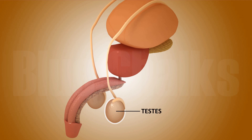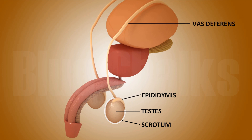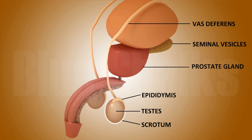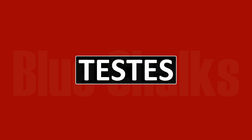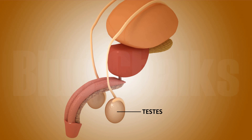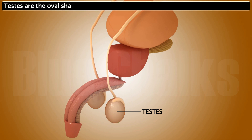The organs include: testis, scrotum, epididymis, vas deferens, seminal vesicles, prostate gland, and penis. The main organ of the male reproductive system is the testis. A man has two testes, which are oval-shaped organs that lie outside the abdominal cavity.